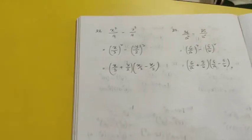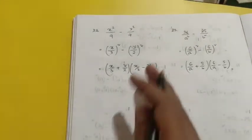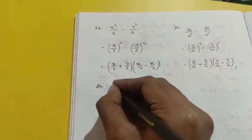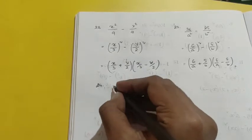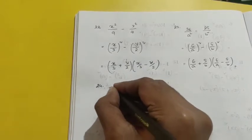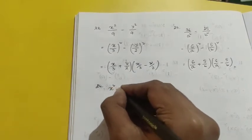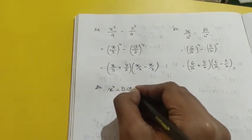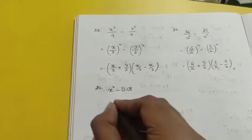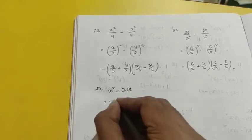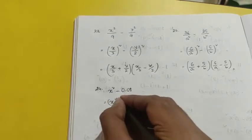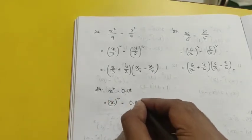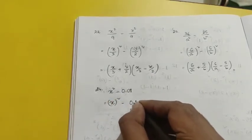Question number 24 is x² - 0.01. x² can be written as (x)² and 0.01 can be written as (0.1)². So it is now in the form of a² - b², and the factorization is (x + 0.1)(x - 0.1).